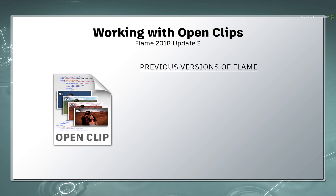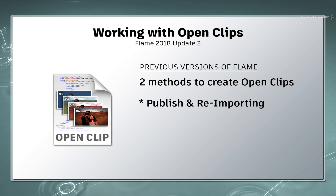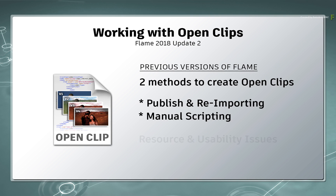However, in previous versions of Flame, there were only two ways to create OpenClips to manage media versioning. This either involved publishing your sequence out of Flame and re-importing it back into Flame, which is not considered a fun and effective task. Or you could manually script your own OpenClips, since they are an XML-based, text-based format, but you'd have to invest the time and resources to get it to work. Some facilities have even automated this process using some clever custom scripting.